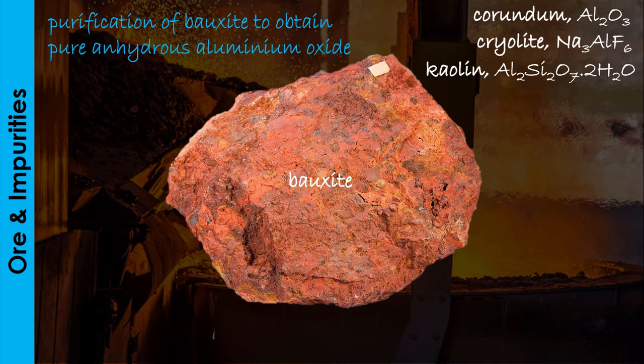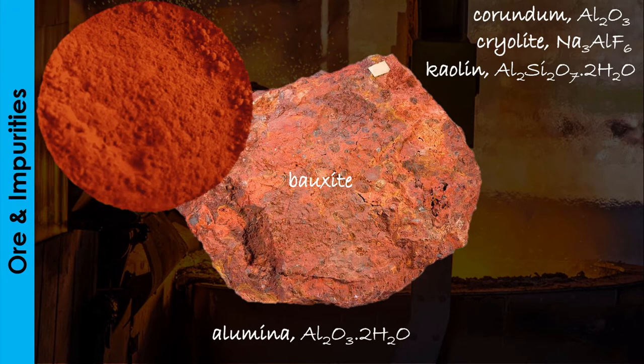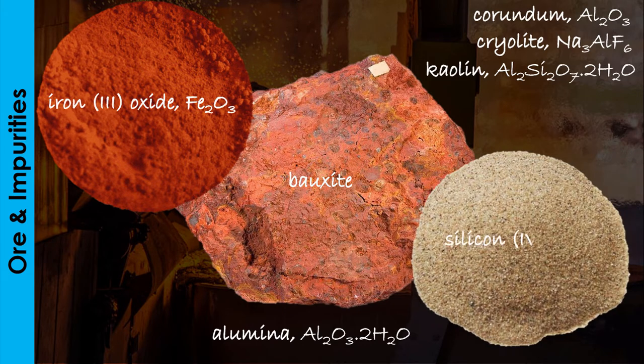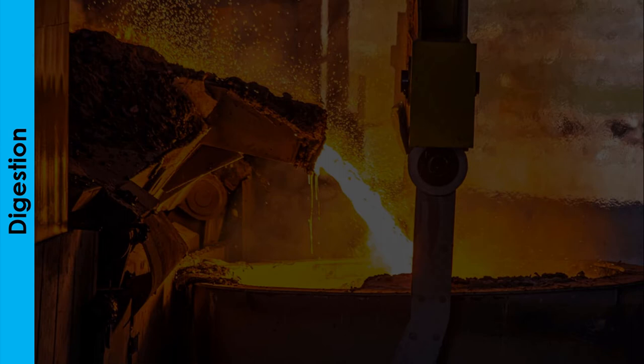Bauxite contains alumina or hydrated aluminium oxide as its main constituent, with iron(III) oxide and silicon(IV) oxide as the impurities. The iron(III) oxide is responsible for the brown color of the ore.